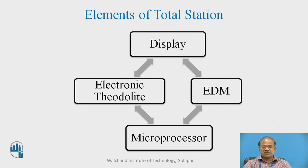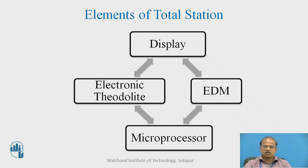Another important element of the total station is the electronic theodolite. Conventionally, we are familiar with vernier theodolites, whereas in the electronic theodolite a mechanism is embedded inside the instrument which is capable of showing a digital display. The verniers are no more there.